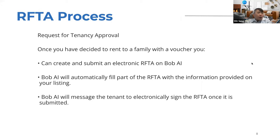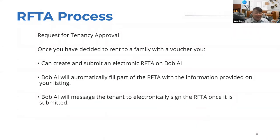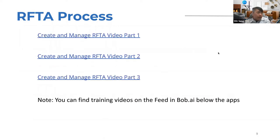For the RTA process, once you've decided to rent to a specific family with a voucher, you can create and submit your electronic RAFTA on Bob.ai. We'll automatically fill out part of the RTA with information you already provided when you listed your unit — so you won't need to re-enter things like whether it's gas or electric. We'll also message the tenant to electronically sign the RAFTA once submitted. Make sure the email address you have for the client matches the one they gave their public housing authority. Training videos are also available in the feed on our website.